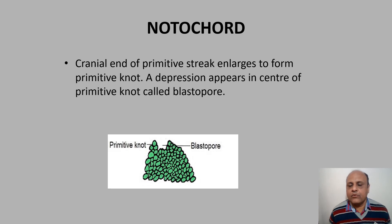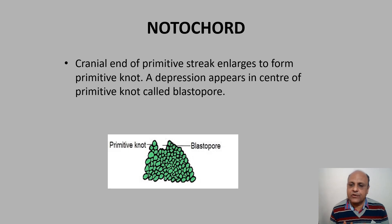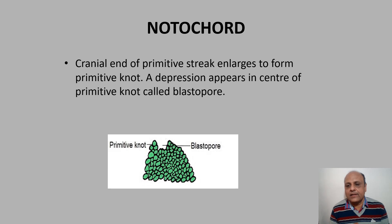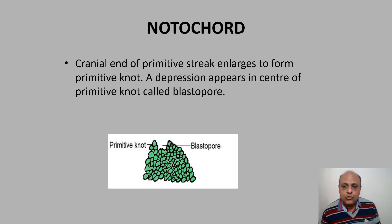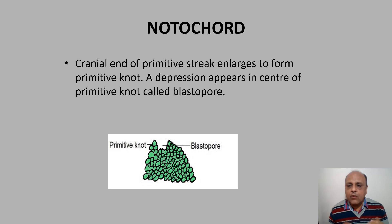Now we come to the development of the notochord. Simply speaking, the notochord is the vertebral column of the embryo. The trilaminar disc has been formed and now the embryo needs a vertebral column — that is called the notochord. It is different from the vertebral column of the adult. Notochord is the vertebral column of the embryo, and we are now going to study how it is formed.